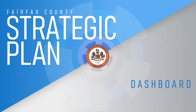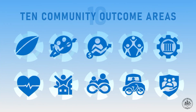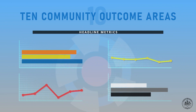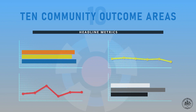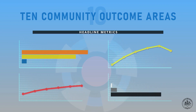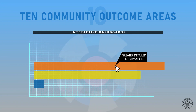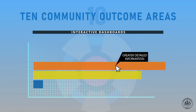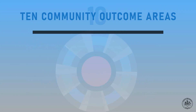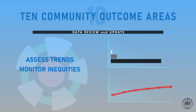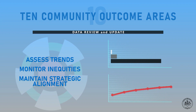Welcome to the Strategic Plan Dashboard Tutorial. The Countywide Strategic Plan includes 10 Community Outcome Areas, each of which will have its own dashboard containing headline metrics visually represented to easily review the data that will continuously inform the Strategic Plan. The dashboards are interactive and enable the reader to access more detailed data and a narrative for context and clarity. Data will be reviewed and updated regularly to assess trends, inequities, and alignment with the strategies included in the Strategic Plan.